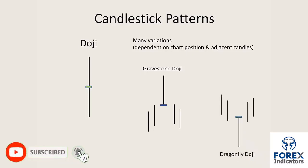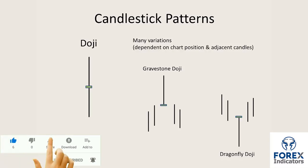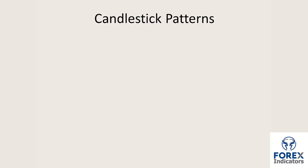Here we have a dragonfly doji. Again, you'll see that at the bottom of the market — a point of support or a point of inflection where the market is turning — the dragonfly doji opens and closes at more or less the same level and has a tail that pushes down. The market then rejects when buyers come in and push the market back up again.